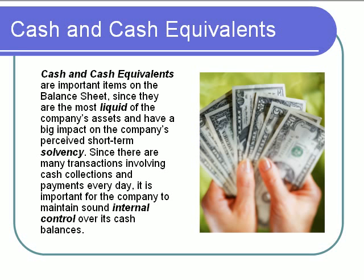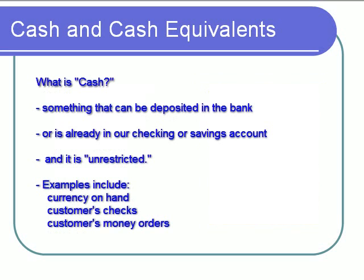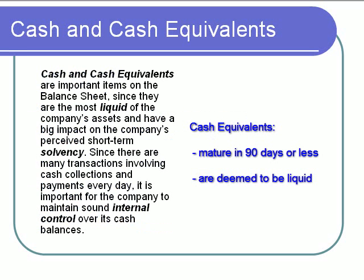Cash represents cash on hand, cash in the till, and also cash in the bank — checking account balances and savings accounts. Cash equivalents are investments that are pretty close to being cash. They're highly liquid, and they have a short-term maturity. A cash equivalent must have, according to the accounting rules, a maturity date of no more than 90 days, and we have to be reasonably sure we'll be able to collect it when it does mature.